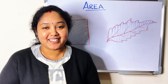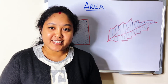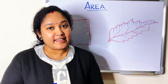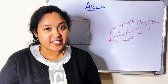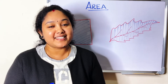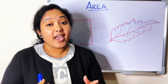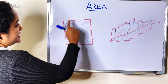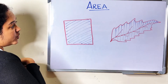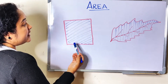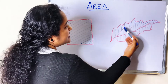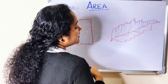Hello, welcome back. Today I am going to discuss the area of a figure or a shape. Area is the amount of surface enclosed by a closed figure, called its area, or the amount of space taken up by a 2D shape or a surface. This is the area of the figure and this is the area of the irregular shape.